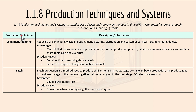Lean manufacturing involves reducing or eliminating waste in design, manufacturing, distribution, and customer service — like minimizing defects. An advantage is that multi-skilled teams are each responsible for part of the production process, which can improve efficiency as workers share skills. Disadvantages include it requires time-consuming data analysis and disruptive changes to existing products.